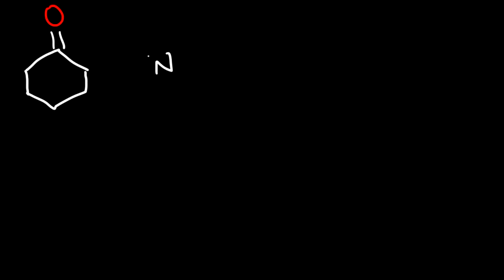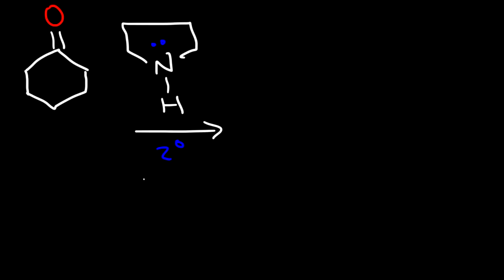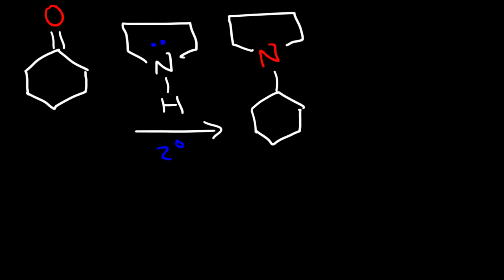In this video we're going to briefly review the Stork enamine reaction. Let's say we have cyclohexanone and we're going to react it with a secondary amine. Whenever you react a ketone with a secondary amine you're going to get an enamine. The product will have a single bond between the carbon and the nitrogen atom and a carbon-carbon double bond. So this is an enamine.